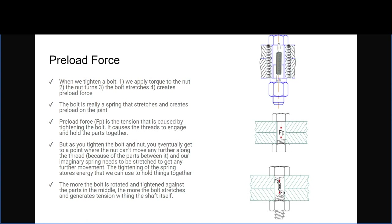When we tighten a bolt there are four main things that happen: we apply torque to the nut, the nut turns, the bolt stretches, and that creates the preload force. The bolt is essentially a spring that stretches and creates preload onto the joint. The preload force, also written as F_FP, is the tension caused by tightening the bolt, causing the threads to engage and hold the parts together. As you tighten the bolt and nut, you reach a point where the nut won't move further along the thread, and our imaginary spring needs to stretch further to get any more movement.